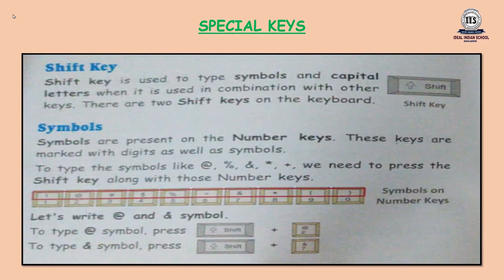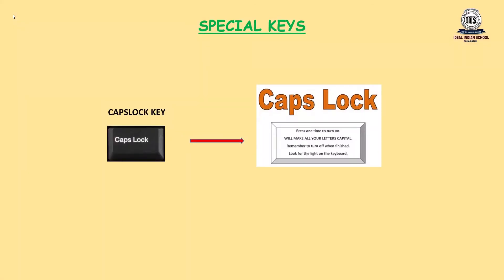Shift key is used to type symbols and capital letters when it is used in combination with other keys. There are two Shift keys on the keyboard. Symbols are present on the number keys. These keys are marked with digits as well as symbols. To type symbols like at the rate, percentage, star, and plus, we need to press the Shift key along with those number keys. Caps Lock key is used to write alphabets in capital letters when it is on and in small letters when it is off. Keyboard has a light for Caps Lock that indicates whether the Caps Lock key is on or off.